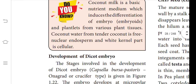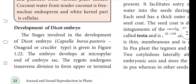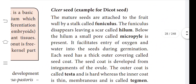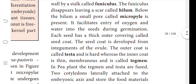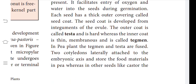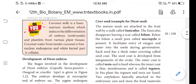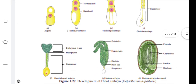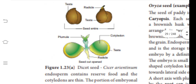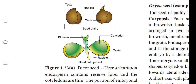Moving on to the dicot embryo and the seed — once all post-fertilization changes occur, the seed is formed. The parts of the seed include funicle, hilum, micropyle, testa, and tegmen. Describing all these terms will explain the structure of a dicot seed. For the structure of a dicot seed, you have to draw diagrams showing cotyledon, plumule, radicle, testa, and tegmen.